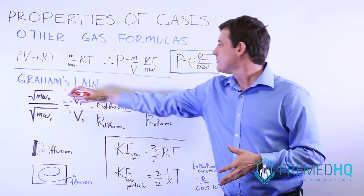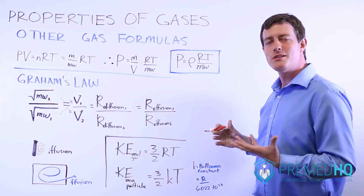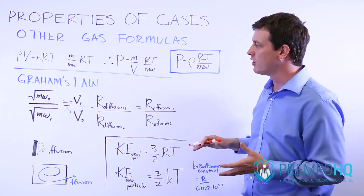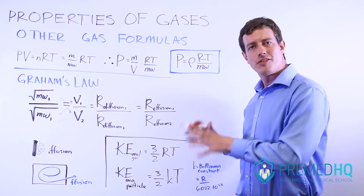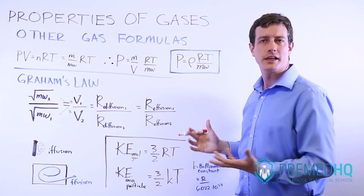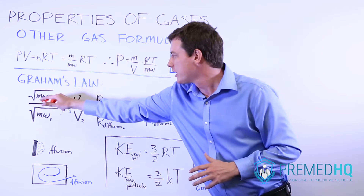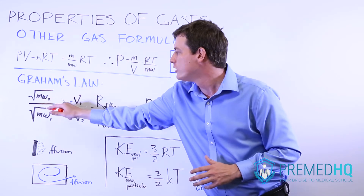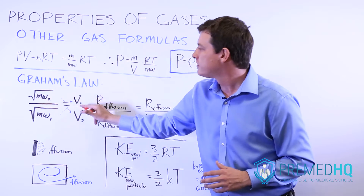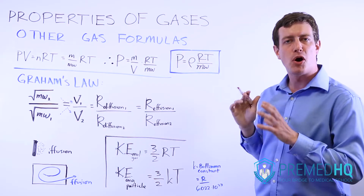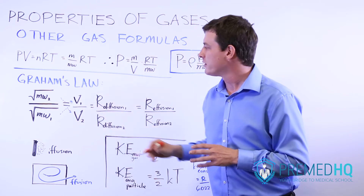Next we'll move into Graham's Law, which is very important. It stipulates that the velocity of gas particles is inversely proportional to the square root of that particle or compound's molecular weight. Specifically, the square root of molecular weight 2 over the square root of molecular weight 1 is proportional to the velocity of particles of compound 1 over the velocity of particles of compound 2.